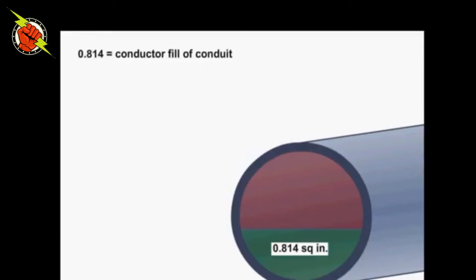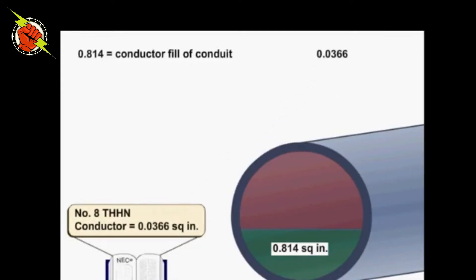Step 2. Determine the cross-sectional area of the existing conductors. Per Table 5 in the NEC, the cross-sectional area of a number 8 THHN conductor equals 0.0366 square inches.